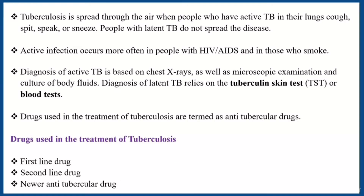Tuberculosis is spread through the air when people with active TB in their lungs cough, spit, speak, or sneeze. People with latent TB do not spread the disease. This active infection occurs more often in people with HIV or AIDS and those who smoke.